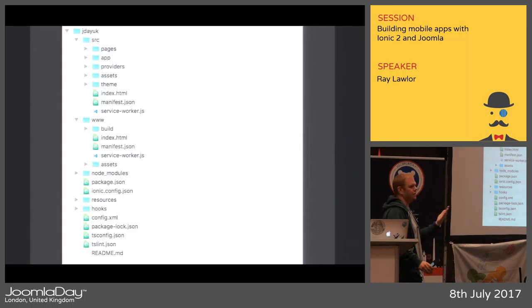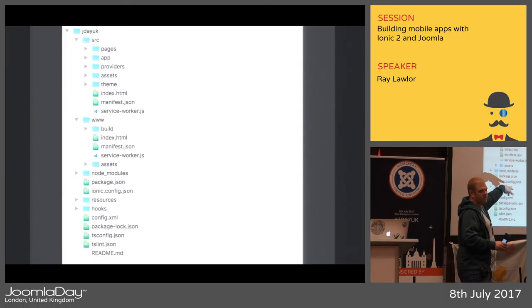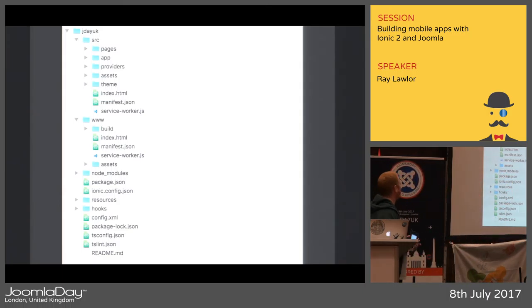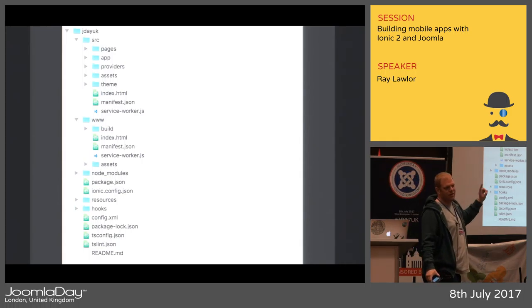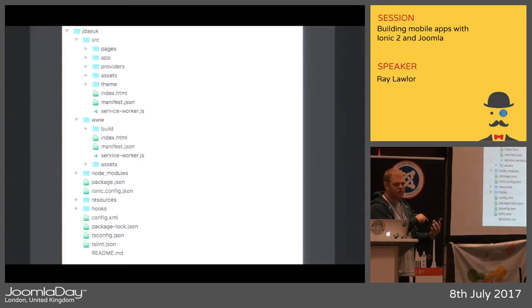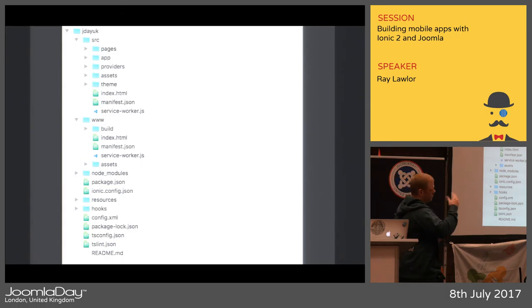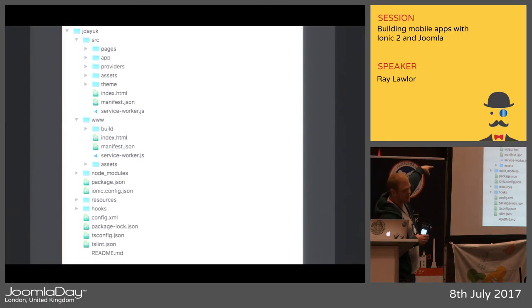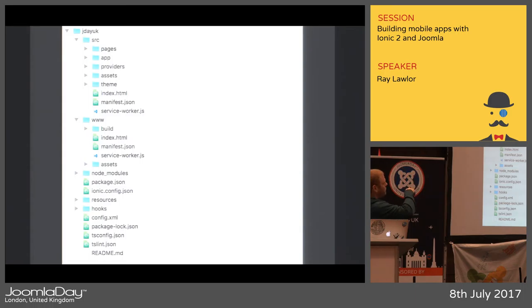There's a node modules folder — don't open it, it's about 300 megabytes of third-party stuff but it doesn't get committed with your Git commits. There are also resources for app icons and splash screens. Inside the SRC folder you've got pages, app, providers, assets, and theme — you do all your SCSS inside your theme. Providers are like an API layer. Every page has three files: the HTML, the SCSS, and the TS — it's very simple.